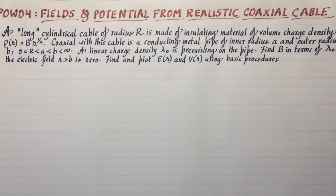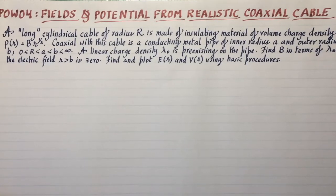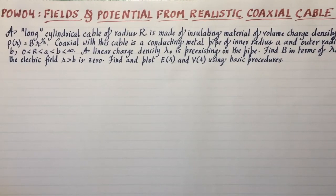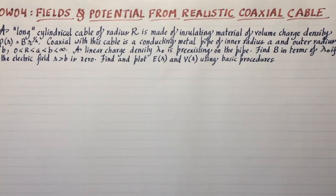Now the problem is twofold. You have to find B in terms of λ₀ if the electric field outside the cable is zero, as is often the case with the coaxial geometry. And then find the electric field and potentials using Gauss's law and integration and plot them. So it's a standard problem for this kind of subject.